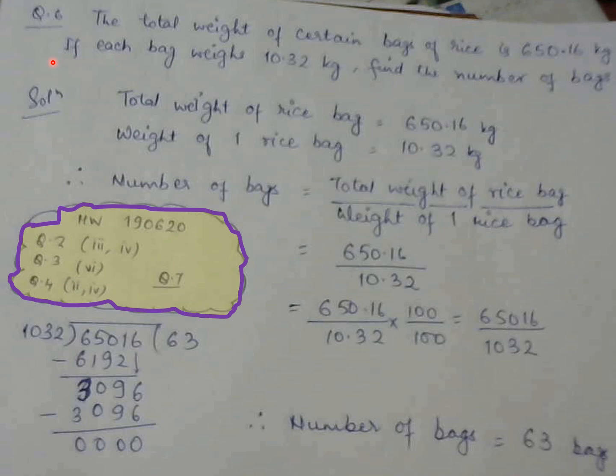Now let us consider one word problem of this exercise. The total weight of a certain bag of rice is 650.16 kg. If each bag weighs 10.32 kg find the number of bags. Solution: total weight of rice bag is 650.16 kg, weight of 1 rice bag is 10.32 kg. So therefore number of bags will be total weight of rice bag divided by the weight of 1 rice bag.